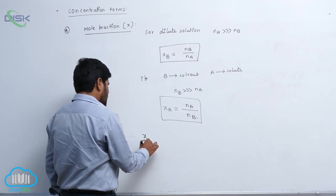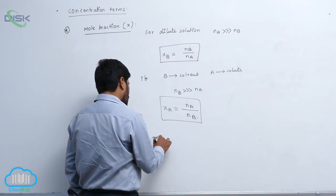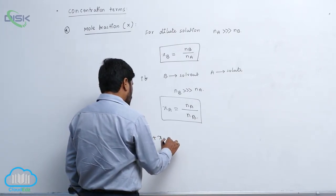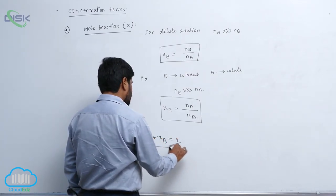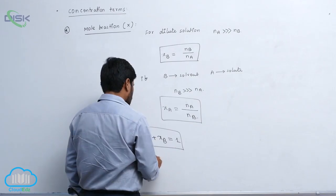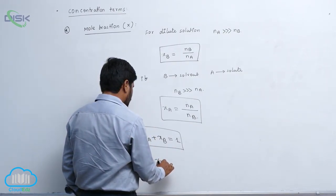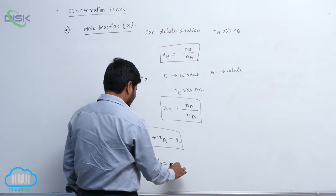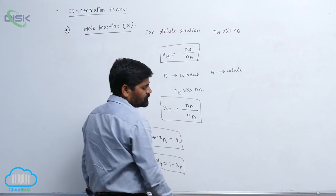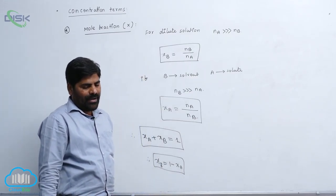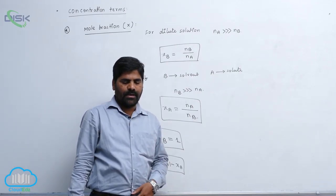Therefore, mole fraction of solvent plus mole fraction of solute always equals to 1. If you want mole fraction of XB, it equals to 1 minus XA.